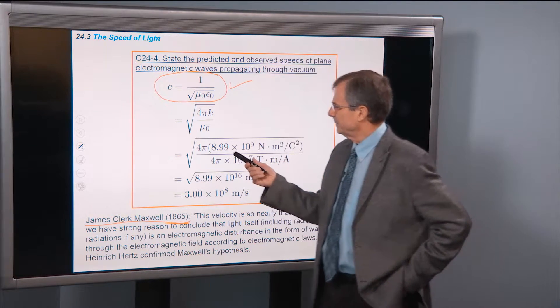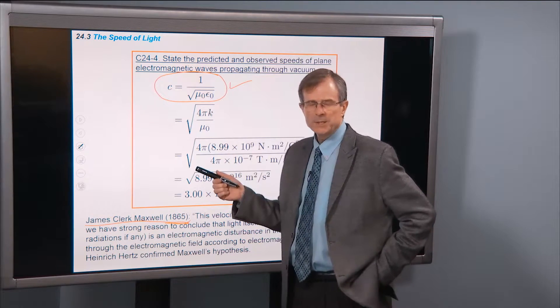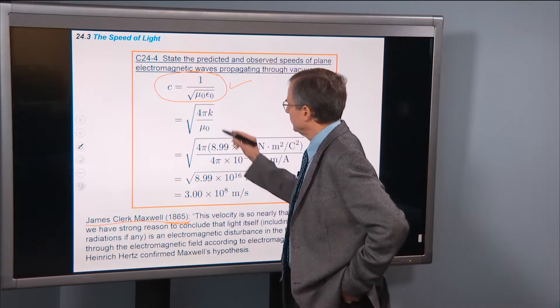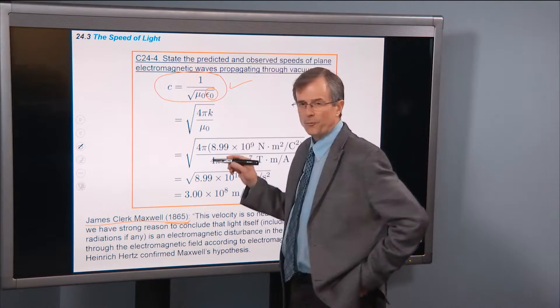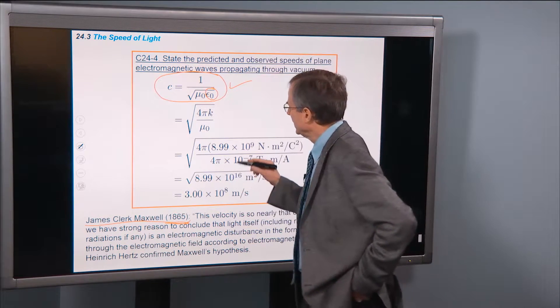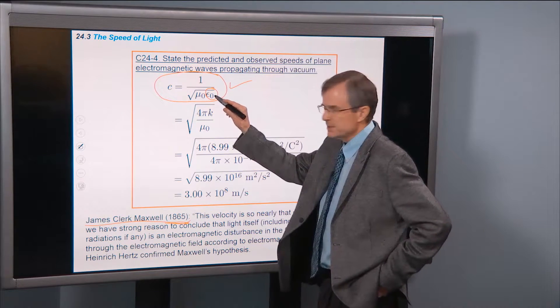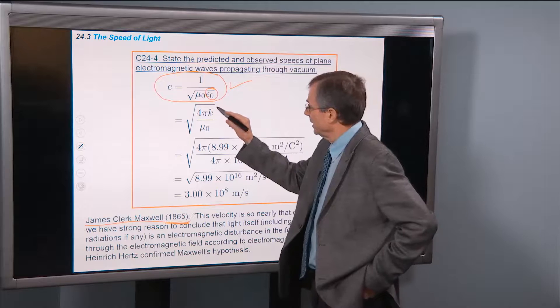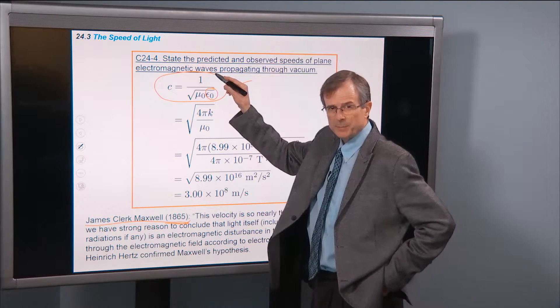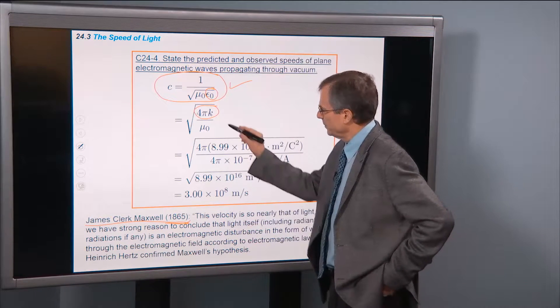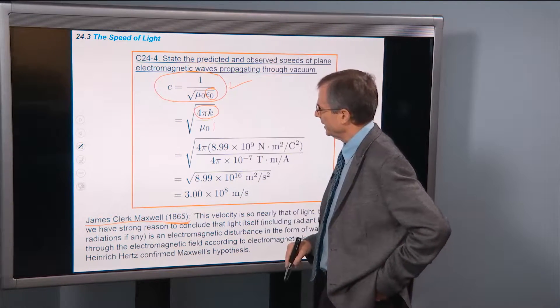Well, these are both parameters, quantities that you know about already. mu-naught, well, epsilon-naught, is 1 over 4πk. So if you put a 1 over 4πk in here, the 1 stays in the denominator, and the square root of 4πk ends up in the numerator. So that's our epsilon-naught that ended up as a 1 over 4πk.